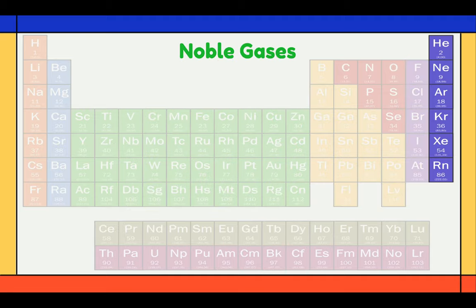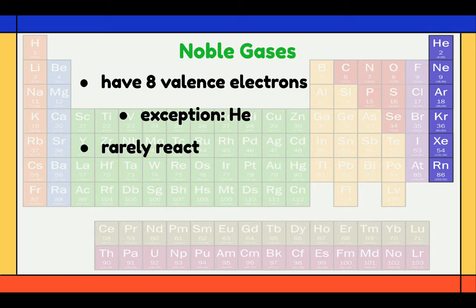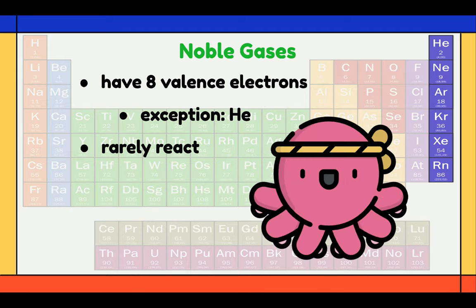Next, we have the noble gases. The noble gases have 8 valence electrons, except for helium, which has 2 valence electrons. Noble gases rarely react with other substances because they have a complete outer energy level — they have achieved the full octet.